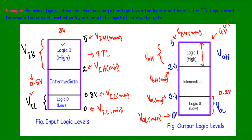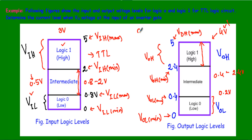Looking at the input and output logic levels, between logic 1 and logic 0 there is an intermediate voltage range. For TTL inputs, this is 0.8 to 2 volts, and for TTL outputs it is 0.4 to 2.4 volts. Any voltage applied within these intermediate ranges will not be treated as either logic 0 or logic 1, creating ambiguity in the logical operation of the circuit.